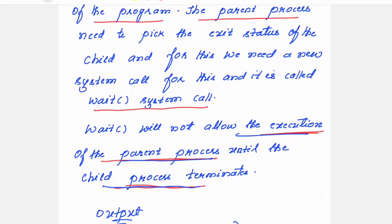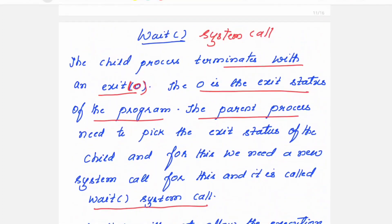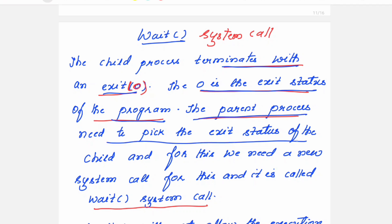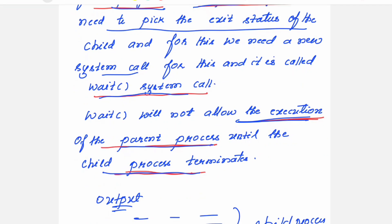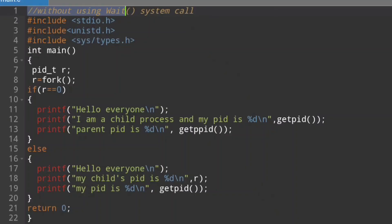This should not happen, because all processes that create child processes would continue leaving PIDs in the process table if they don't use the wait system call. Hence, make use of the wait system call in the parent block so that the parent waits until the child executes. The child terminates with exit(0), the parent picks up the exit status, and then the parent starts its task.